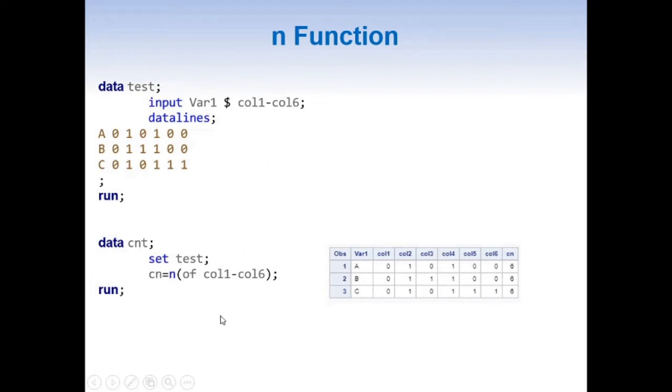Whenever we want to mention multiple columns in SAS, we can simply use of col1-col6. This means we want a particular function to be applied on these six columns. n function gives number of non-missing numeric variables.